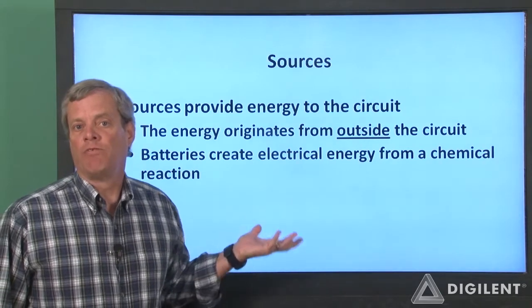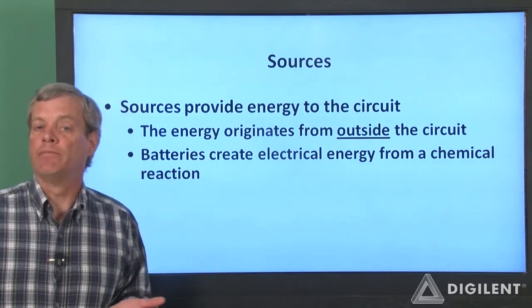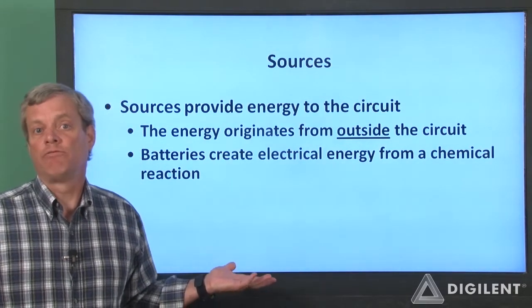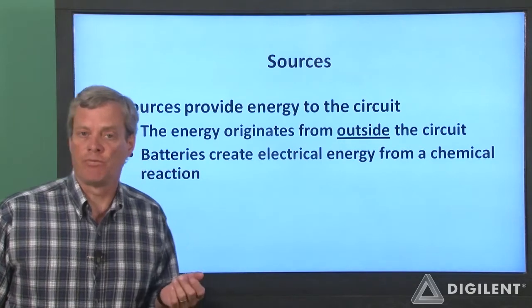For example, a battery provides electrical energy by performing a chemical reaction. A generator creates electrical energy from a mechanical source, for example by using steam or water pressure to turn a turbine.